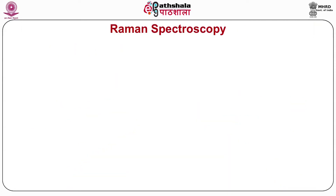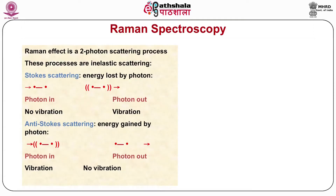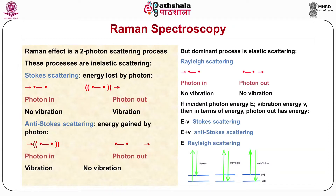The Raman effect is a two-photon scattering process involving inelastic scattering. In Stokes scattering, energy is lost by the photon while interacting with the particle — photon in has no vibration, but photon out has vibration. In anti-Stokes scattering, energy is gained by the photon — vibration occurs when the photon enters, and no vibration when photon exits. The dominant process is elastic Rayleigh scattering with no vibration in either case. In terms of energy: photon out has energy E minus V for Stokes, E plus V for anti-Stokes, and E for Rayleigh scattering.